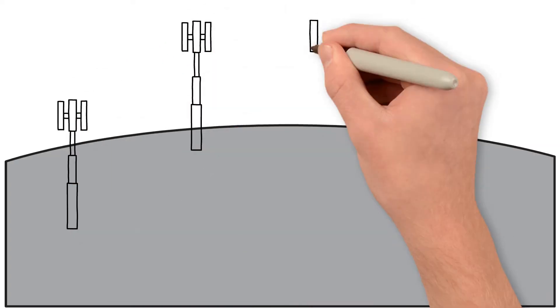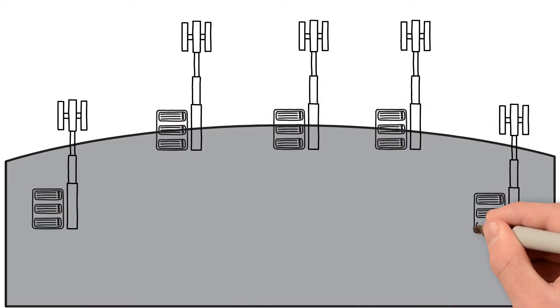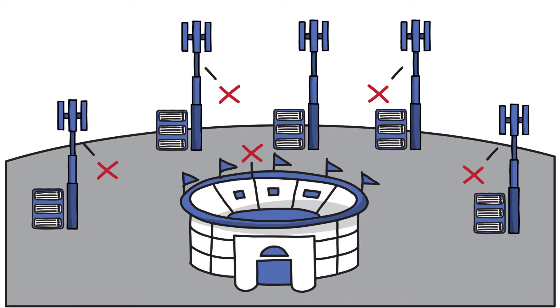Of course, as soon as the stadium empties, data consumption in this area becomes negligible. Suddenly, all those powerful base station equipment will then be idle. This means most of the time, the tower's capacity is wasted.